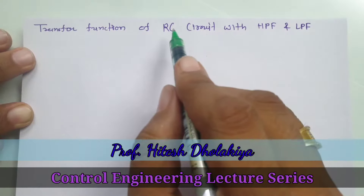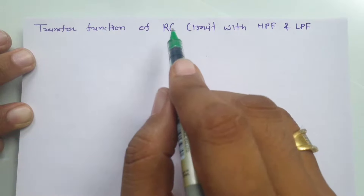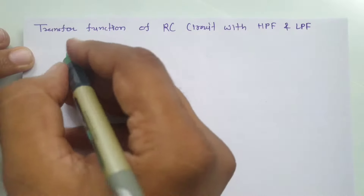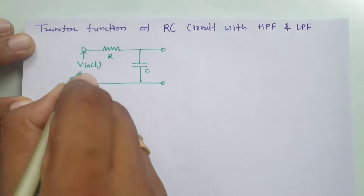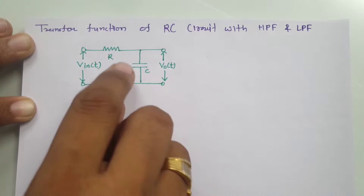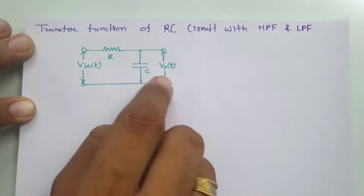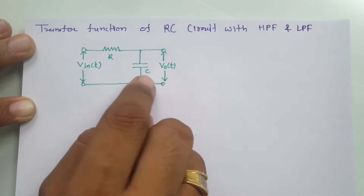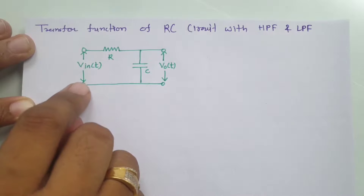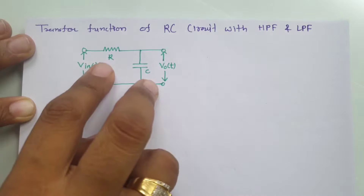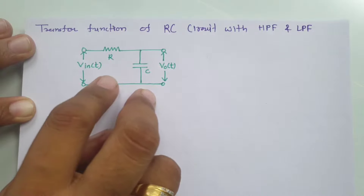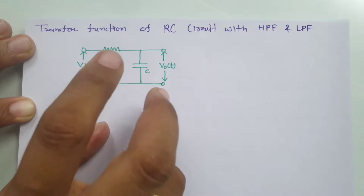Let me explain the basic circuit of an RC circuit with low pass filter first. In this circuit, we have an R and C connection. We are taking output across capacitance C and giving input from the source. This circuit is functioning as a low pass filter, and later I will explain how it functions as a low pass filter.